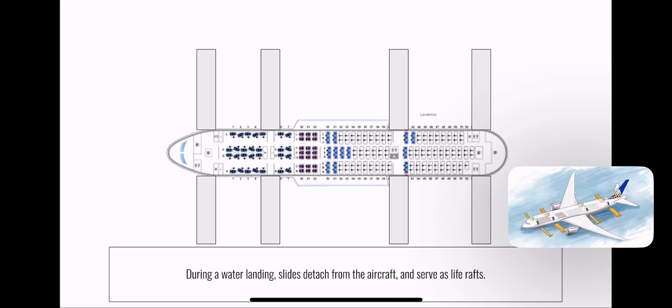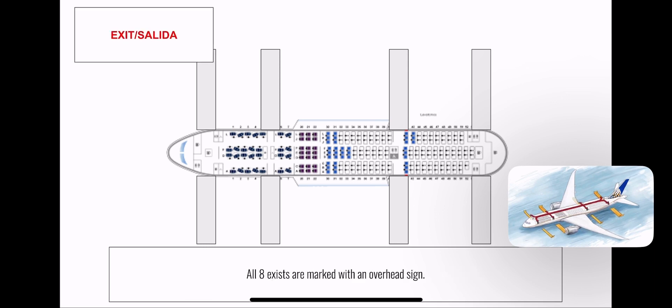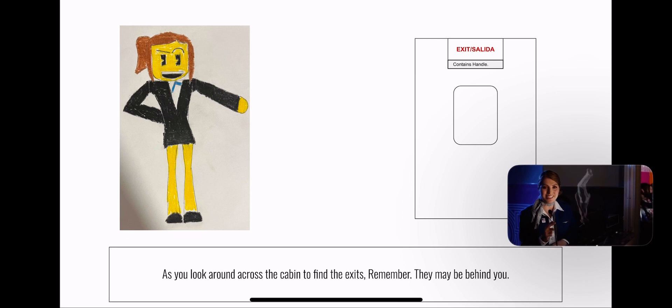In a water landing, slide rafts detach from the aircraft and are used as life rafts. All eight exits are marked with overhead signs. As you locate the two exits nearest your seat, remember they may be behind you.